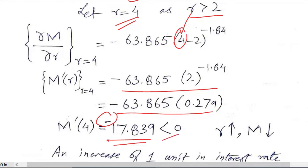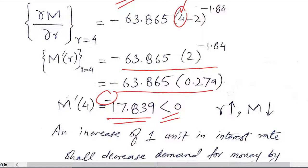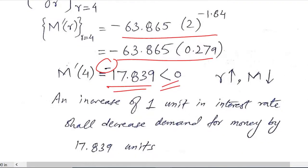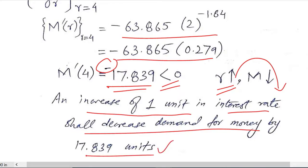Since it's a negative value it means that an increase in discount rate is going to decrease the demand for money, and that is also observable in real life, as when the discount interest rate increases the speculation purpose is preferred. So an increase of one unit in interest rate shall decrease the demand for money by this amount. The quantification is also done in this case.